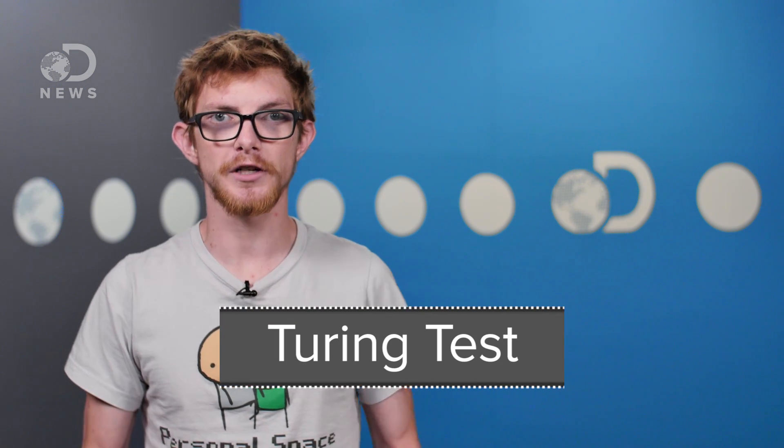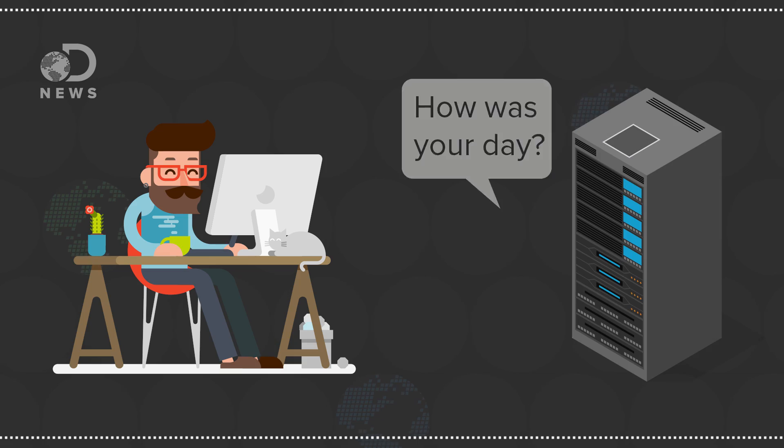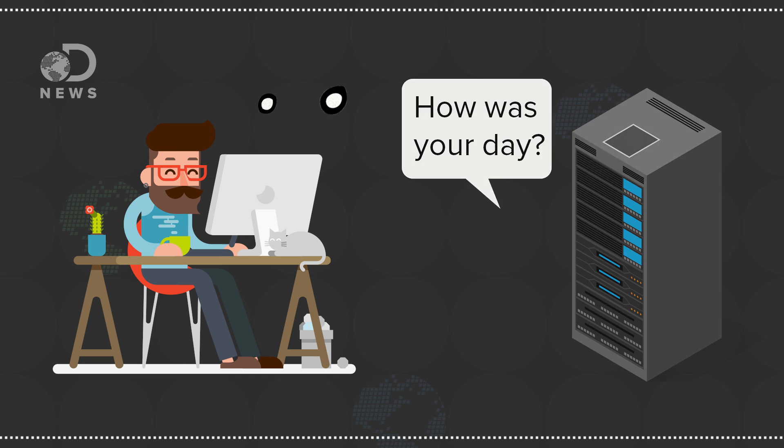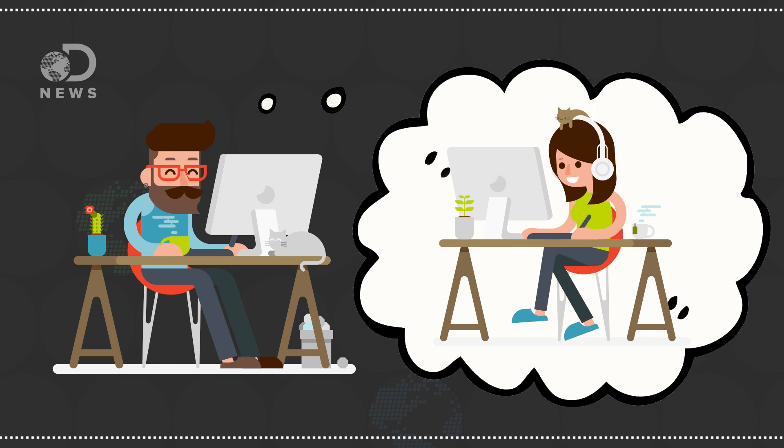The most famous test of artificial intelligence is the Turing test. Basically, a computer passes the Turing test if it can chat with a human judge for 5 minutes and fool the judge into thinking it's human 30% of the time. Aside from one controversial effort in 2014, where a chatbot snuck past the judges by lowering expectations,